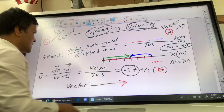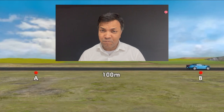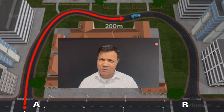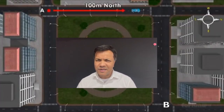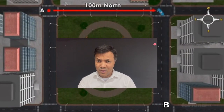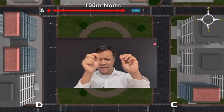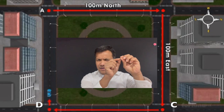Let's end with a short quiz of four questions. Question 1: What is the distance and displacement when this car moves from point A to point B? Question 2: What is the distance and displacement when the car takes a different path from A to B? Question 3: What is the distance and displacement when the car moves from A to A and then to B? Question 4: What is the distance and displacement when the car moves from A to B to C to D and back to A?